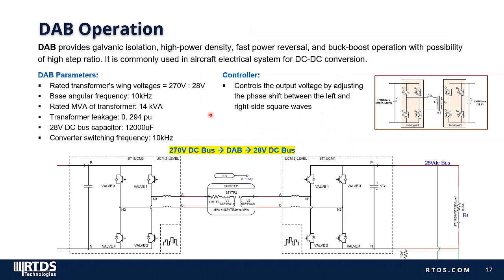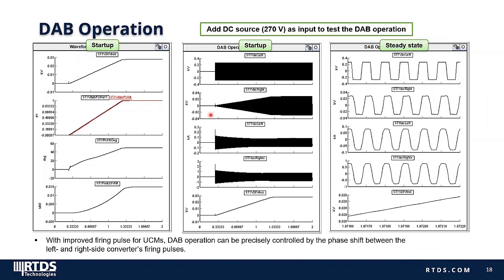For conversion between the 270 V and 28 V DC buses, we use a DAB — dual-active bridge — converter. This converter provides isolation, high power density, fast power reversal, and bulk booster operation with the possibility of a high step ratio. It is commonly used in aircraft electrical systems for DC-DC conversion. This converter is designed with a 10 kHz switching frequency with appropriate transformer leakage, and at full power the phase shift angle is around 40 degrees. We recently developed an integrated DAB model which can save four nodes in one DAB — it has been fully tested and will be released soon. The simulation results show the output DC voltage established with a ramping-up rate, with the DAB operation precisely controlled by the fast shift between left and right side converter firing pulses.